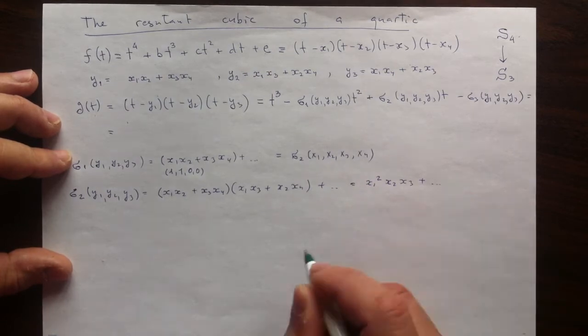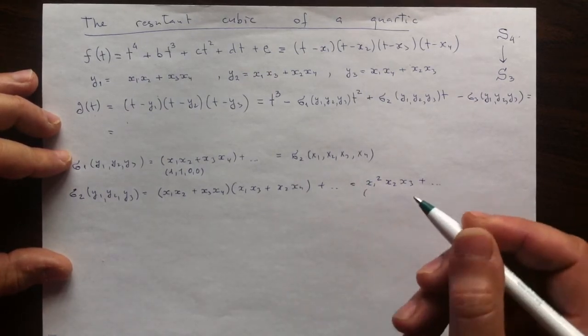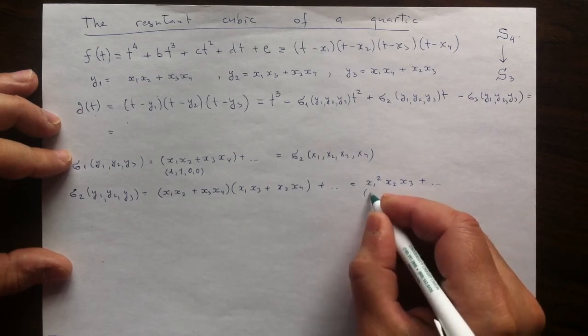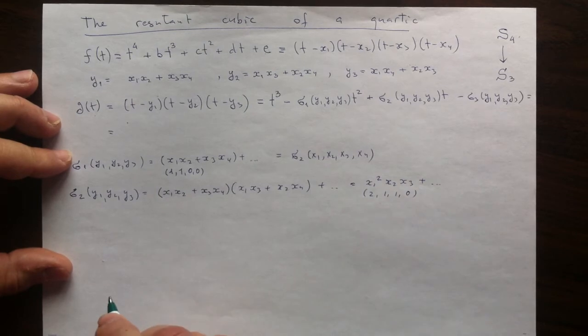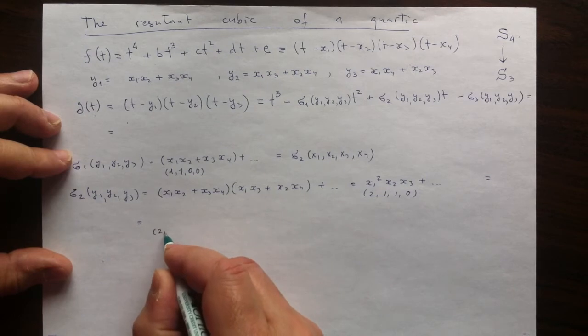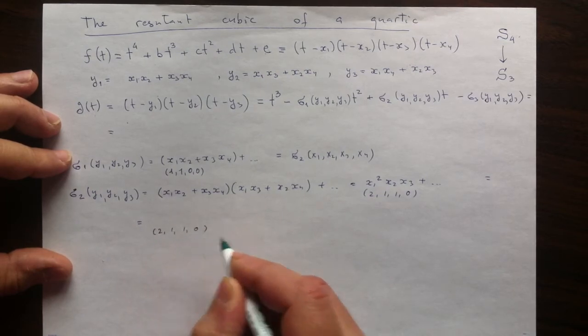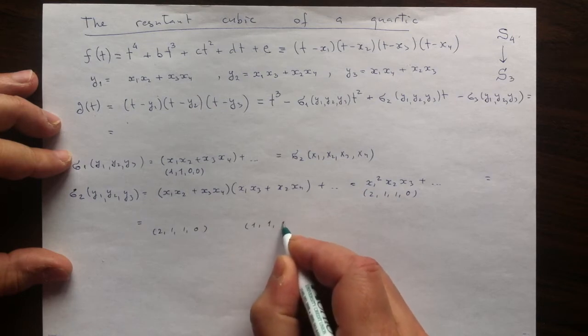The highest monomial in this product is x1 squared, x2, x3. The vector of powers is 2 and 1 and 1 and 0. And there is just one more vector which is less than this, the vector with coordinates 1, 1, 1, 1.